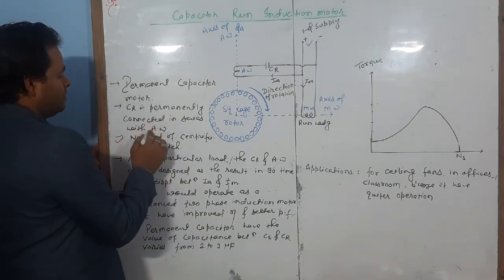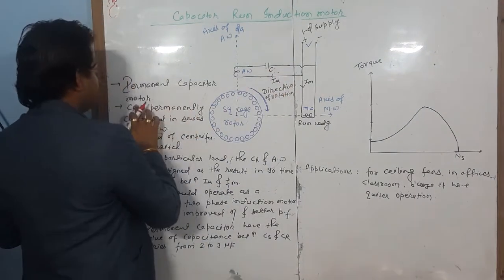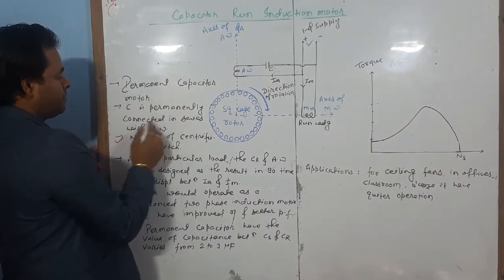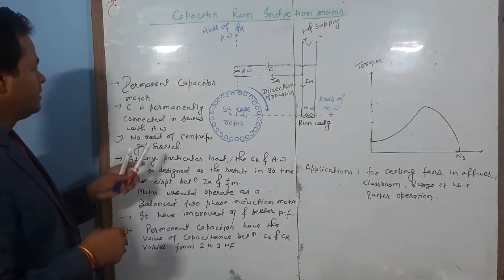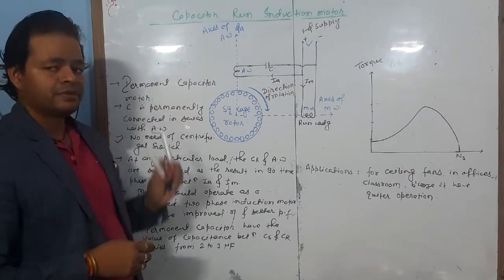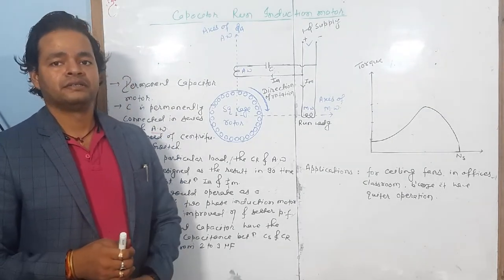The auxiliary winding is permanently connected with the capacitor. This is called the permanent capacitor motor because this capacitor is permanently connected.